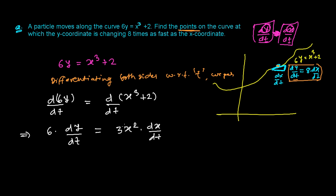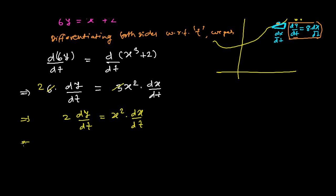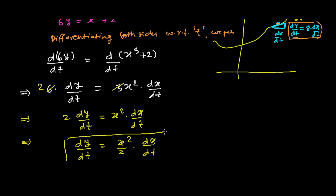Further, we can simplify: 6 dy/dt equals 3X squared dx/dt. Dividing both sides by 3 gives 2 dy/dt equals X squared dx/dt. So we get dy/dt equals X squared over 2 times dx/dt. Let's call this Equation 1.